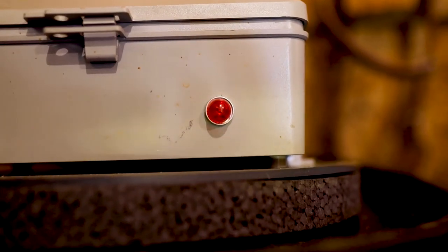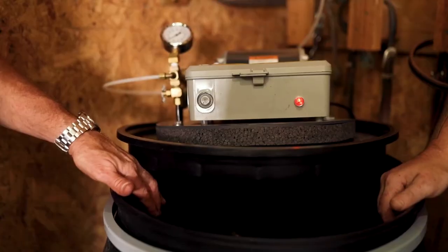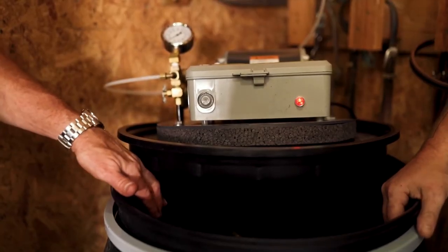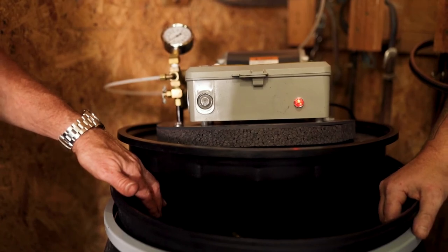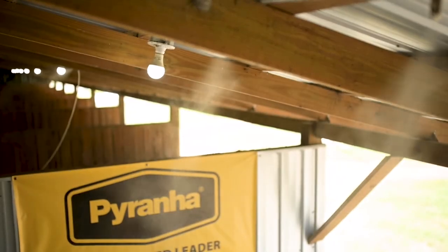A red indicator lamp will illuminate when the float line has been pulled. This indicates the tank is low and service replenishment is recommended. Thank you for choosing Piranha Products.